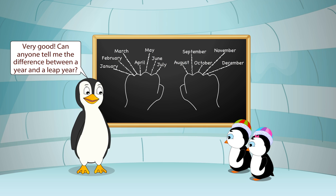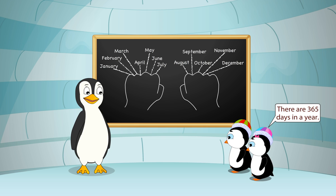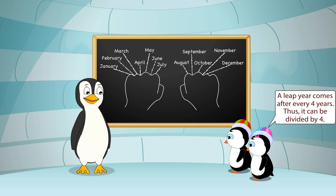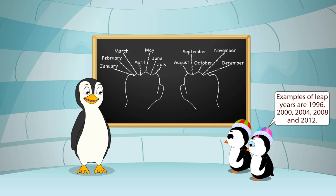Can anyone tell me the difference between a year and a leap year? There are 365 days in a year. But a leap year has 366 days. February has 29 days in a leap year. A leap year comes after every four years. Thus, it can be divided by four. Examples of leap years are 1996, 2000, 2004, 2008 and 2012.